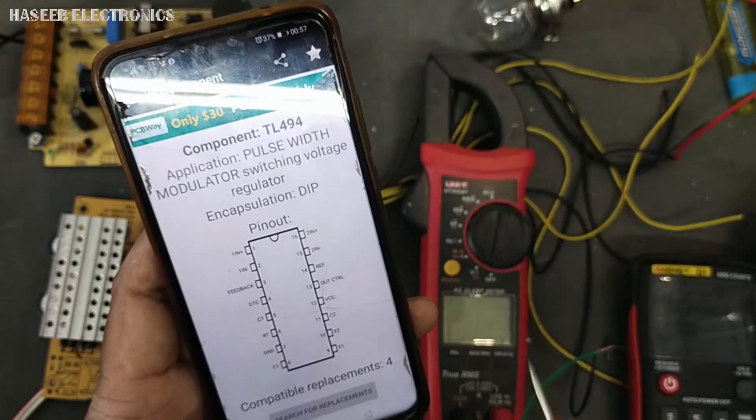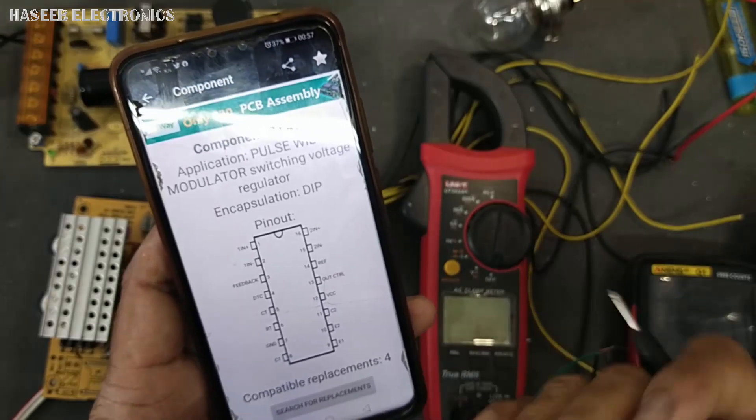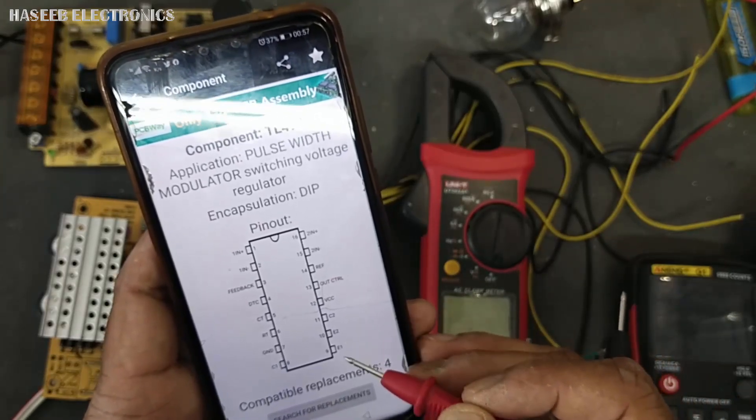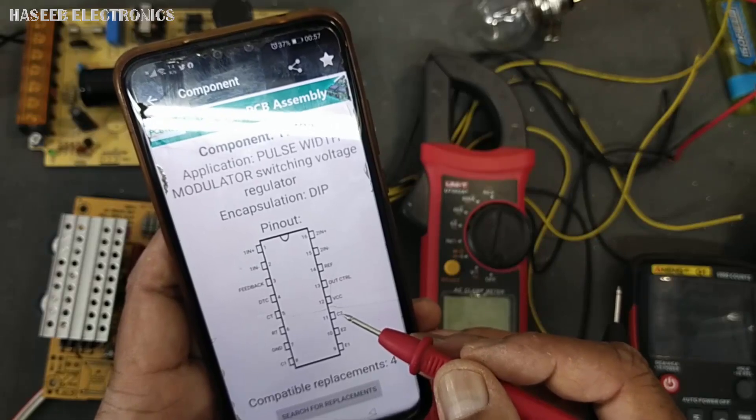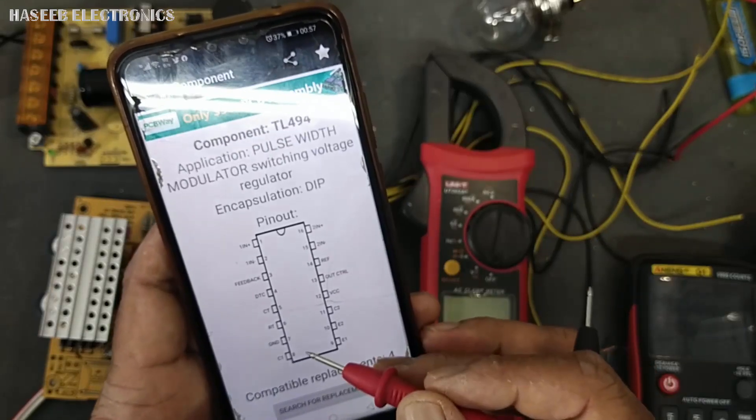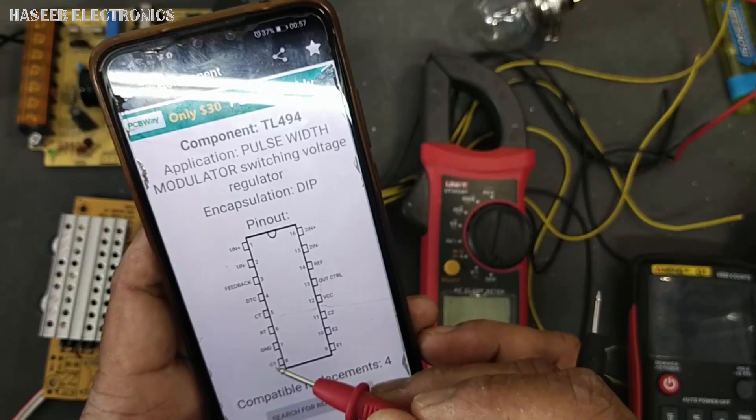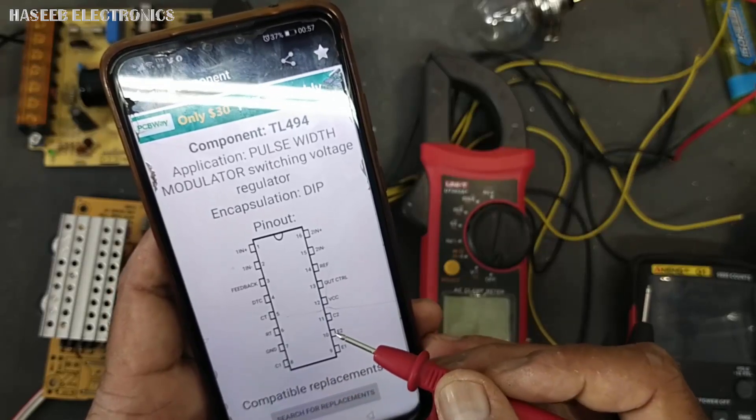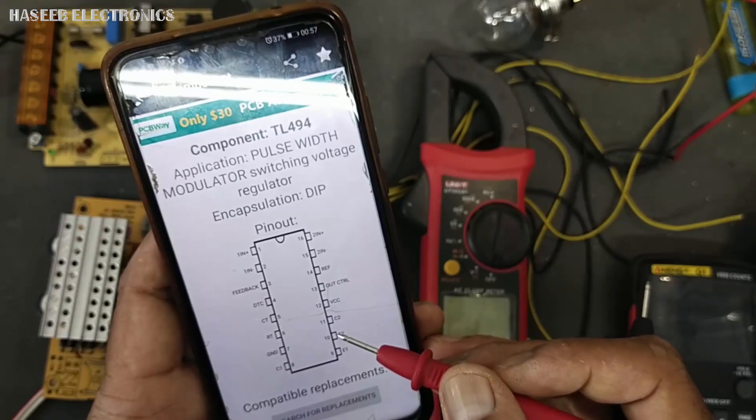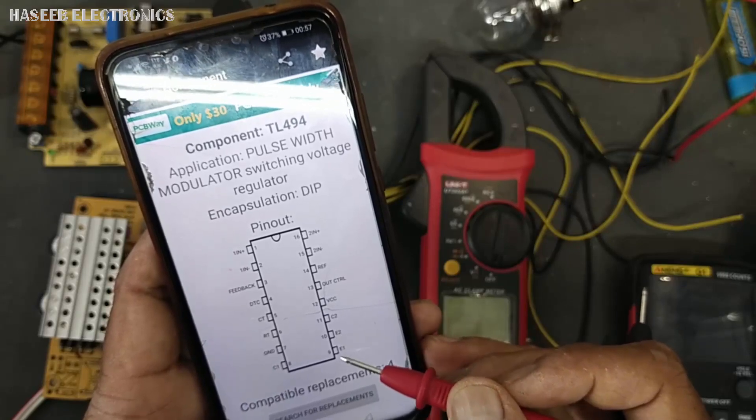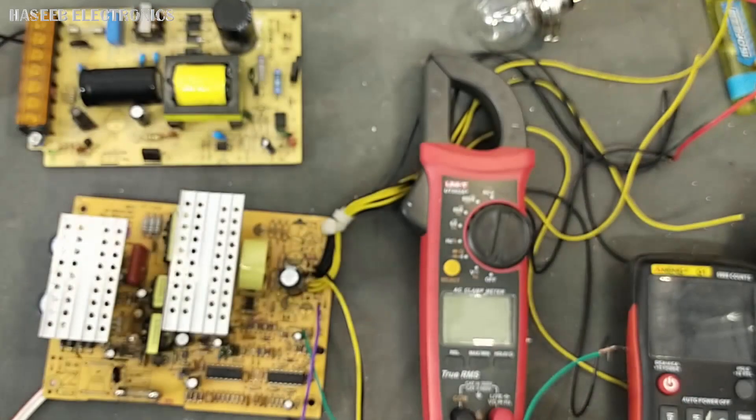In TL494, KA7500, if emitter is grounded, the drive signal will be from the collector pin. If the collector is supplied with positive voltage, at that time we will receive the drive signal from pin number 10 and 9. Now we will check.